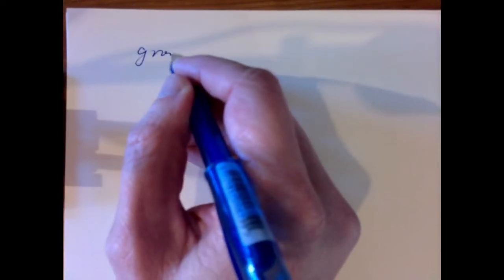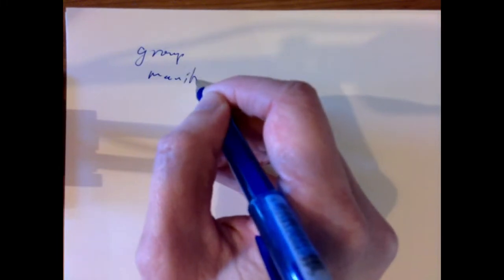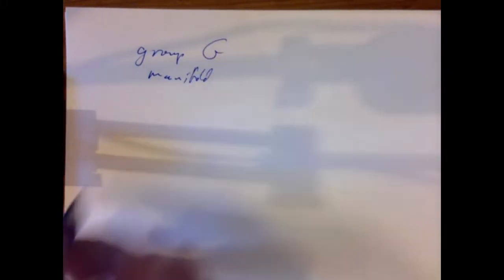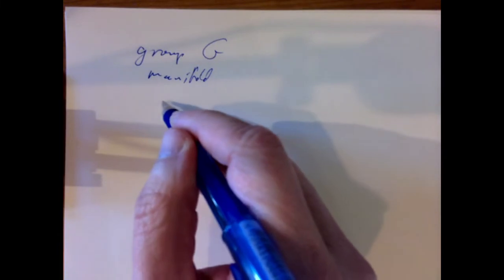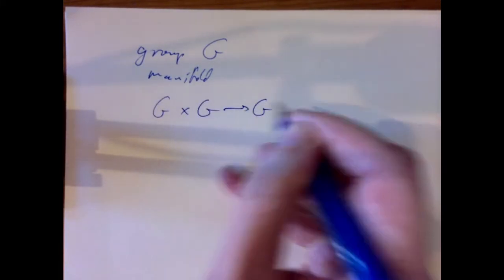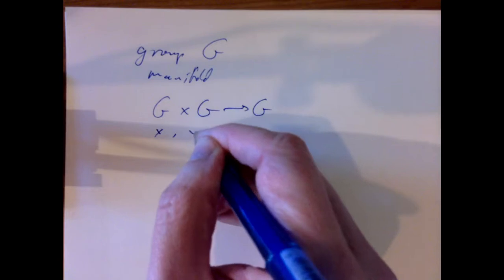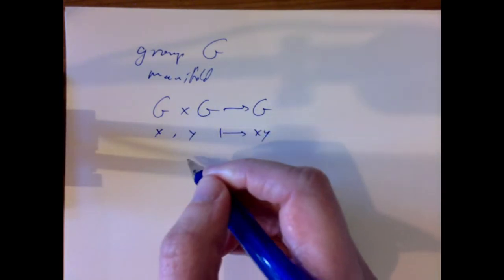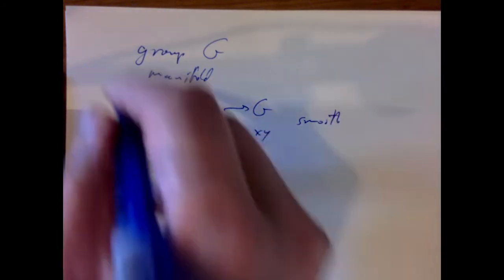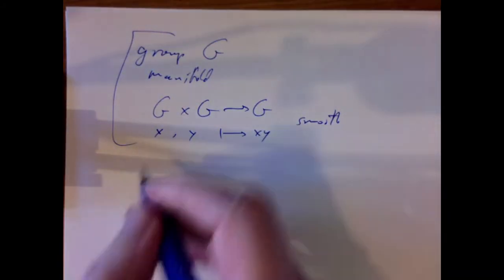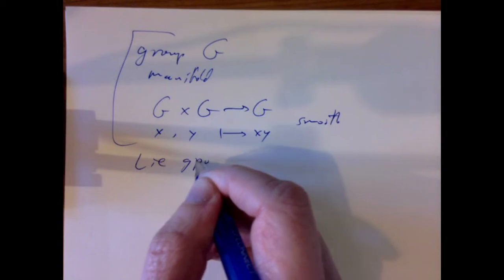In this lecture, we want to think about groups of transformations of manifolds, which are traditionally known as Lie groups. The precise definition is simply that a Lie group is a group G, but also a manifold at the same time, and the group multiplication operation — mapping any two elements to their product — is a smooth map of manifolds. That's the definition of a Lie group.